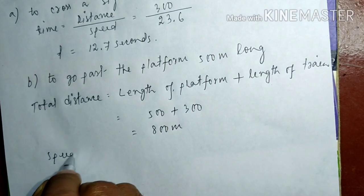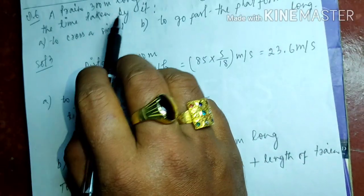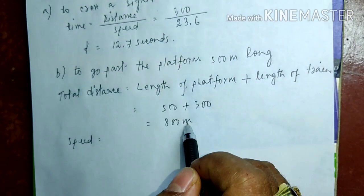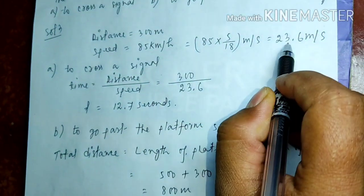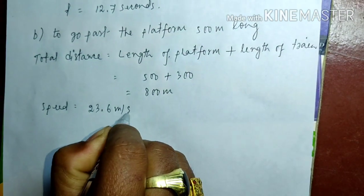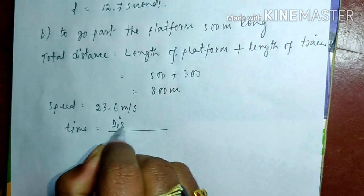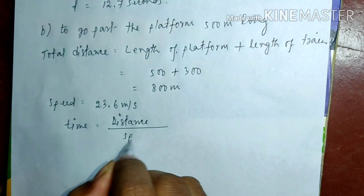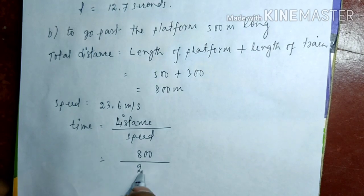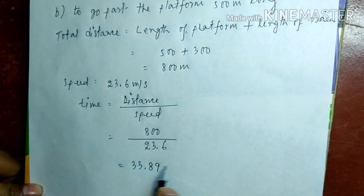The speed is the same for both parts a and b, that is 85 kilometers per hour. But since the total distance is in meters, we use the converted speed of 23.6 meters per second. Now we find the time: time equals distance by speed, which is 800 divided by 23.6, giving us 33.89 seconds.